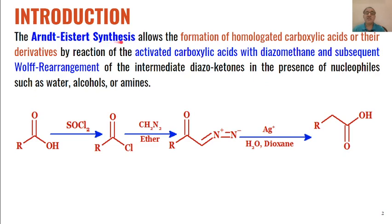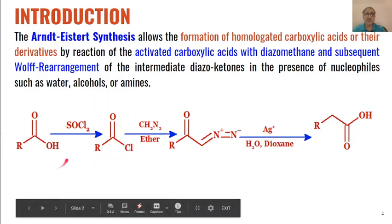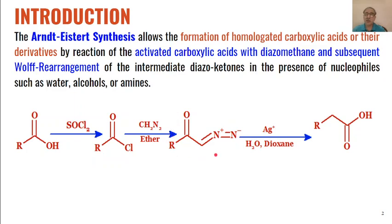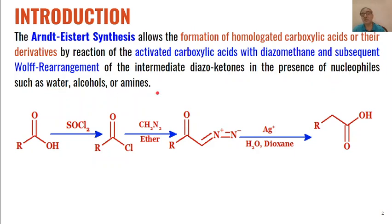The Arndt-Eistert synthesis allows the formation of homologated carboxylic acids or their derivatives by reaction of activated carboxylic acids with diazomethane, and further reaction of these diazomethane derivatives in presence of silver salts to get converted through Wolff rearrangement to the products. We can get different types of carboxylic acid derivatives if we use water, alcohols, or amines as the solvent.